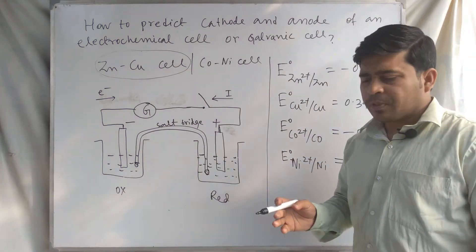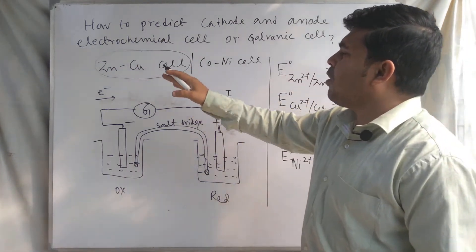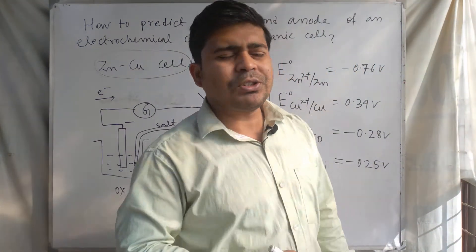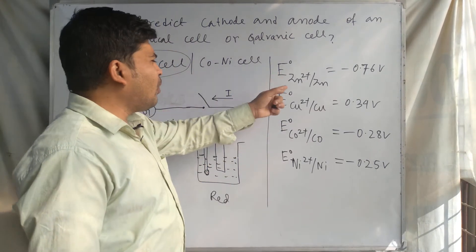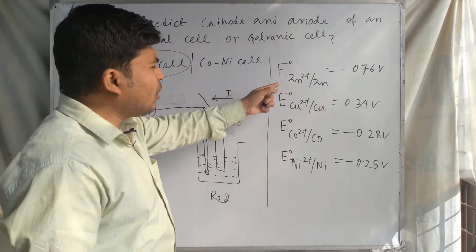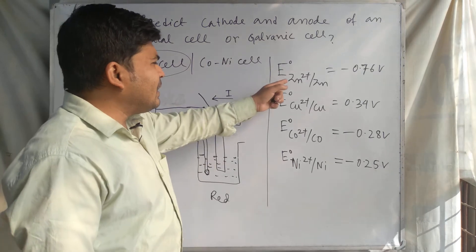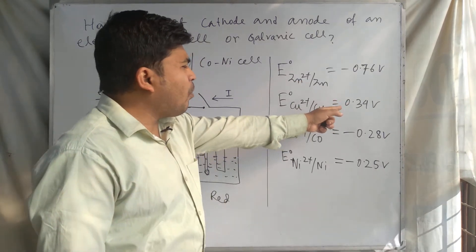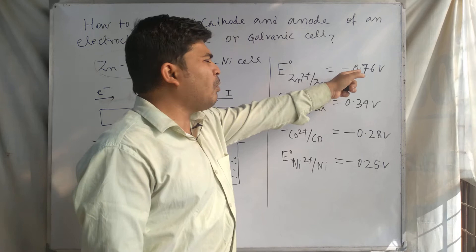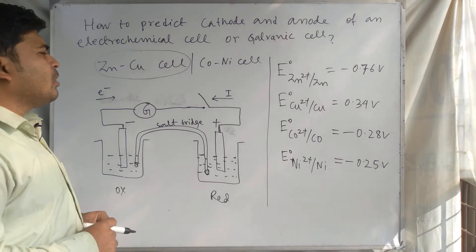How can we predict which electrode — zinc or copper — is behaving as cathode and which is behaving as anode? To find out the answer, we have to understand the standard reduction potentials of these electrodes. Here you can see the standard reduction potential of zinc and copper: 0.34 volt is the standard reduction potential of copper, and minus 0.76 volt is the standard reduction potential of zinc. The electrode with a higher value of standard reduction potential is behaving as cathode.